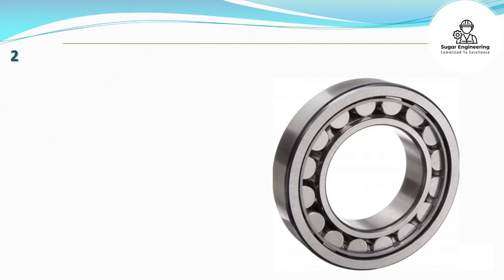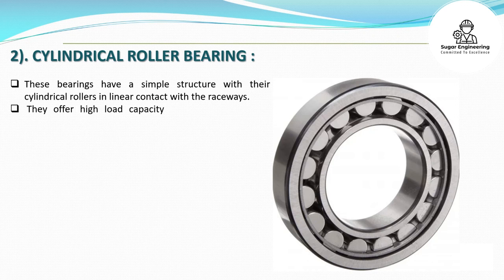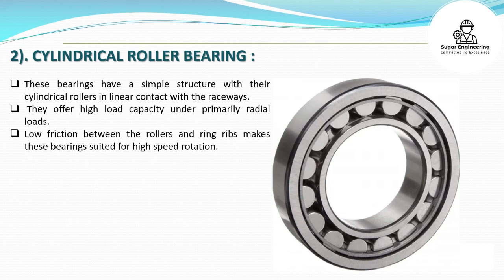Cylindrical roller bearings have a simple structure with cylindrical rollers in linear contact with the raceways. They offer high load capacity under primarily radial loads. Low friction between the rollers and ring ribs makes these bearings suited for high-speed rotation.